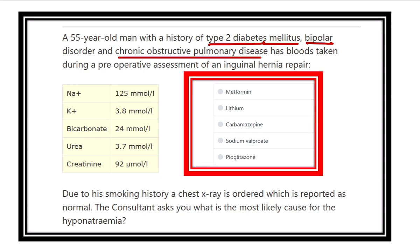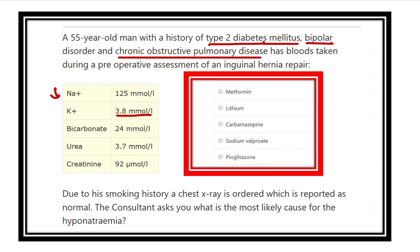A blood sample was taken and the findings are: sodium 125, which is reduced; potassium 3.8, which is within normal limits; bicarbonate 24, also normal; urea 3.7; and creatinine 92 micromoles per liter. Due to a smoking history, a chest X-ray was ordered, which reported normal.